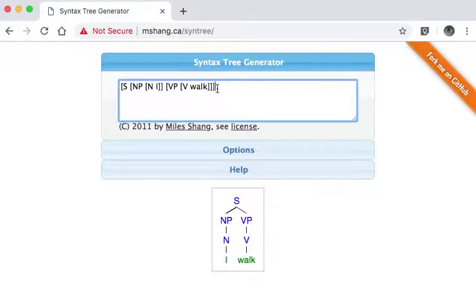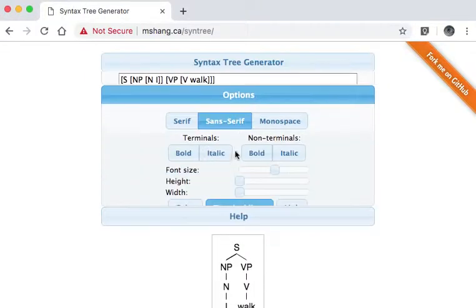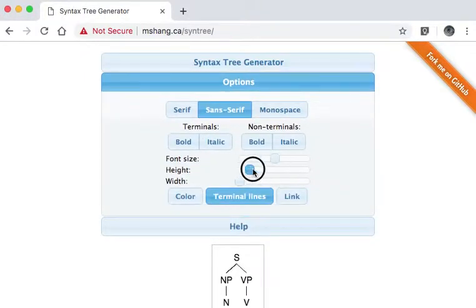Anyway so that's kind of fun and if you ever need to produce a syntax tree for yourself for something written, I like this website, this mshang website, mshang.ca slash syntree. There's options, there's different things that you can do with it, you can make it black and white like so, you can change the sizes of things.